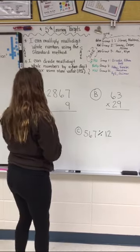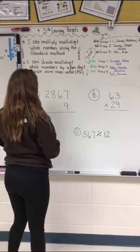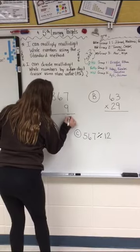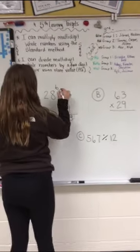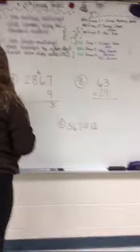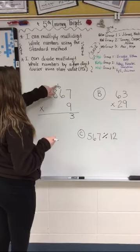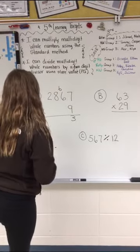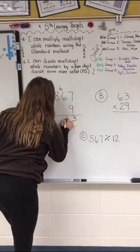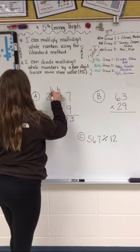What we're just going to do is 9 times 7, which is 63, so you're going to put your 3 down here and your 6. And 9 times 6 is 54, and you're going to add your 6 to 54, which is 60, so you're going to put your 0 here and put your 6.